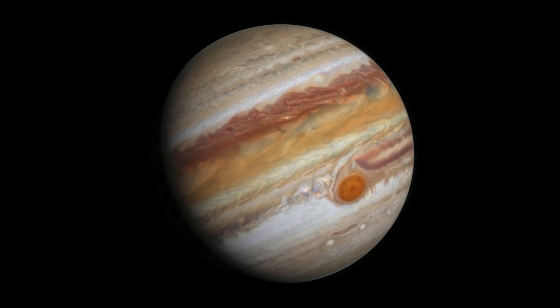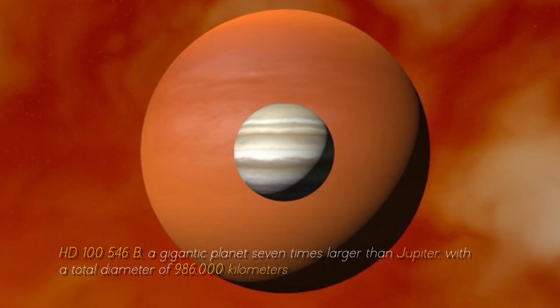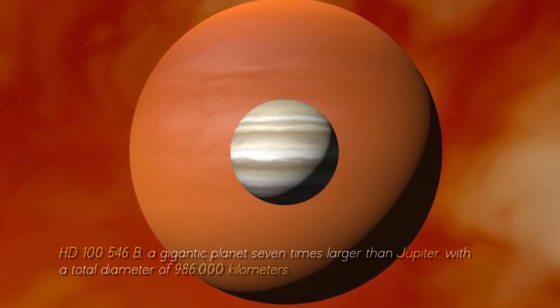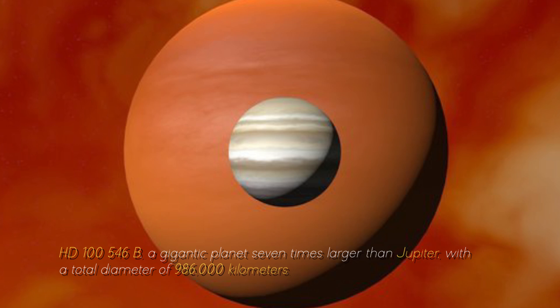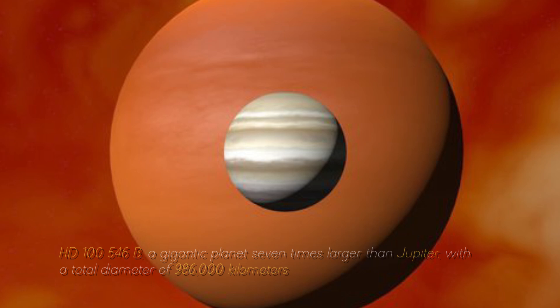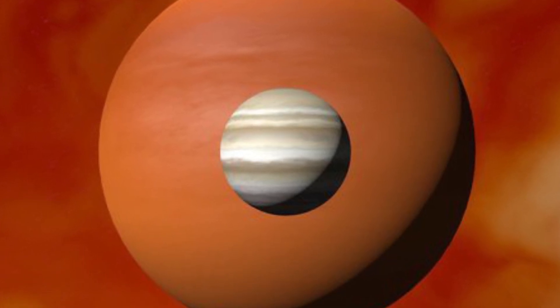Now, let's compare Jupiter with the largest planet in the known universe, HD-10546 b, a gigantic planet seven times larger than Jupiter, with a total diameter of 986,000 kilometers. You can imagine what Earth would look like near this cosmic monster, can't you?